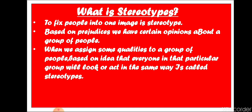Because of prejudices, we have certain opinions about a group of people. When we form a general opinion, assumption, or imagination about a person, group, or community, that is a stereotype. The thought is based on the idea that everyone in that particular group will look or act in the same manner. To fix people in one image is a stereotype. Based on prejudices, when we assign some qualities to a group on the basis that everyone in that group will look or act the same way, that is a stereotype.